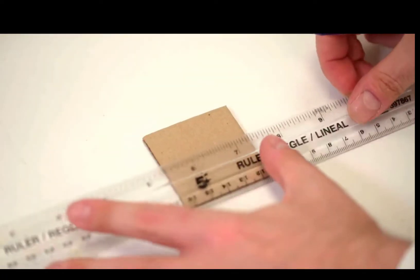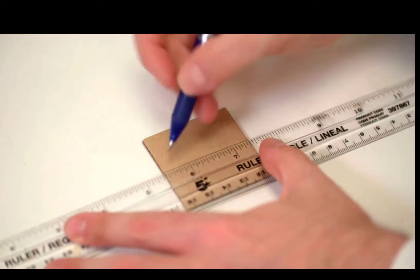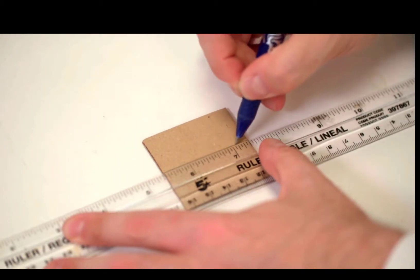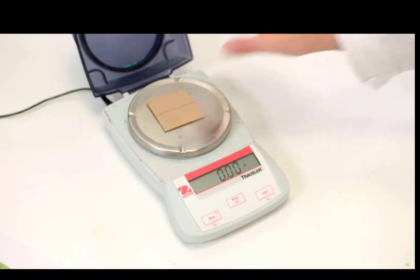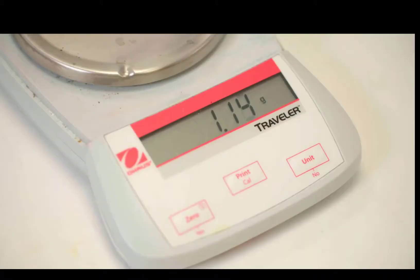First, a straight line is drawn across the middle of the card. This helps to identify the exact height that it will be dropped from. Then, the mass of the card is measured and recorded.